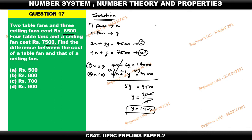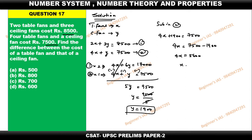Therefore y = 9500 / 5 = 1900. Substitute y = 1900 into equation 2: 4x + 1900 = 7500, so 4x = 5600, giving x = 1400. The difference between the ceiling fan and table fan is 1900 - 1400 = 500 rupees. This is Method 1.